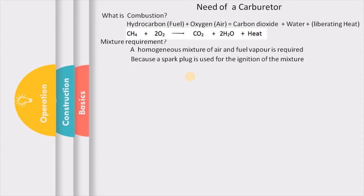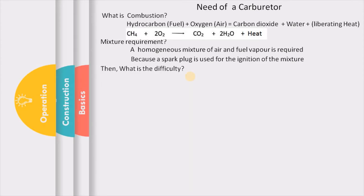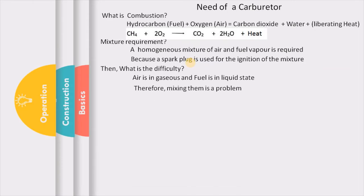Now, we have a fuel and we have air — but the difficulty in mixing them is that air is in gaseous form and fuel is in liquid form. It is difficult to mix a gas and a liquid. So we have to come up with a solution, and that is where the carburetor comes into picture.